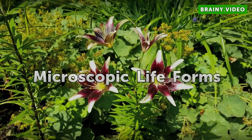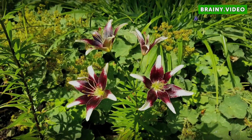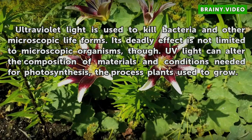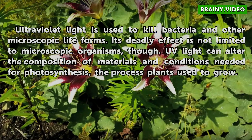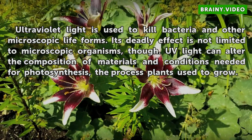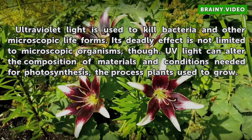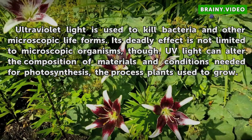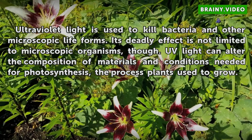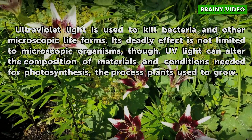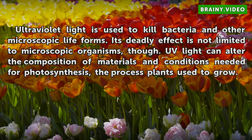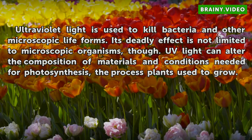Microscopic Life Forms. Ultraviolet light is used to kill bacteria and other microscopic life forms. Its deadly effect is not limited to microscopic organisms, though. UV light can alter the composition of materials and conditions needed for photosynthesis, the process plants use to grow.